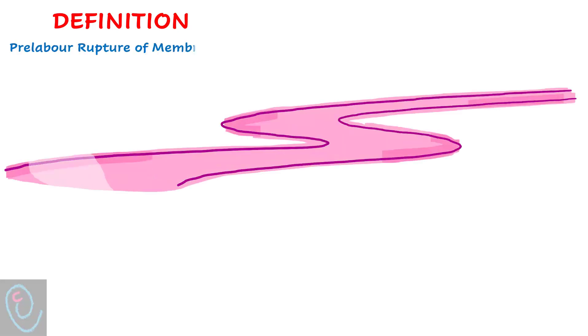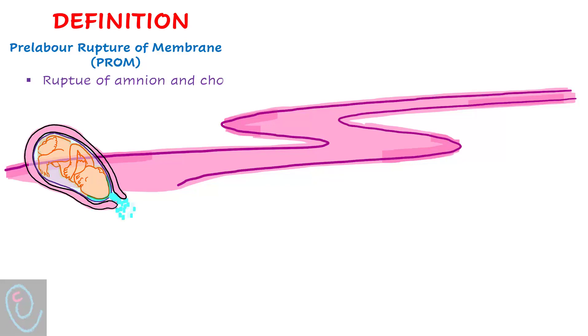Pre-labor rupture of membrane, PROM, refers to rupture of amnion and chorion before the onset of labor. However, if it happens before 37 weeks, it's called pre-term PROM.